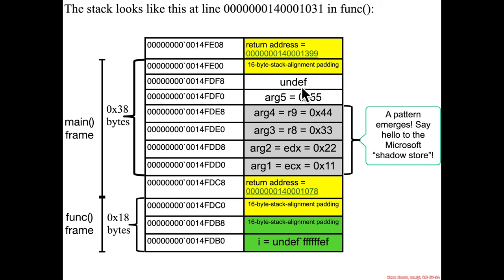some stack padding, some undefined space, and then five, four, three, two, one. These are our function parameters that main is passing to func.